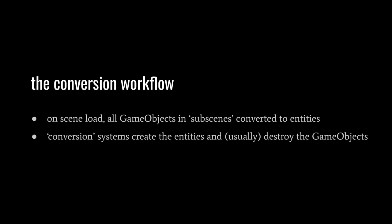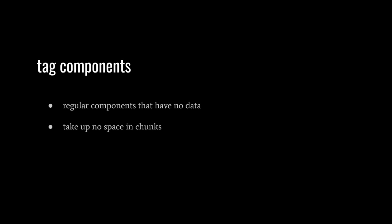Rather than directly creating entities in the Unity editor, we still create scenes composed of conventional game objects, but using special conversion systems we can convert game objects of subscenes into entities when a scene loads. After conversion, the game objects are usually destroyed. A component with no data is called a tag — such components can tag entities. For example, if we want only some objects affected by gravity, we give only those entities a gravity tag and query for it when applying gravity. Even though tag components take up no storage space, they are still part of an entity's archetype, so adding or removing one moves the entity to another chunk.